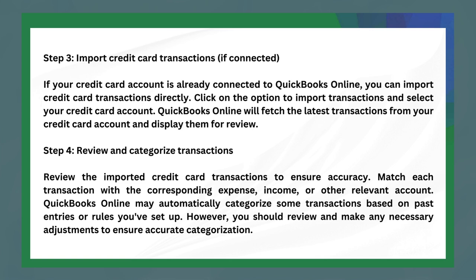The fourth step is to review and categorize transactions. Review the imported credit card transactions to ensure accuracy, and match each transaction with the corresponding expense, income, or other relevant account. QuickBooks Online may automatically categorize some transactions based on past entries or rules you have set up. However, you should review and make any necessary adjustments to ensure accurate categorization.